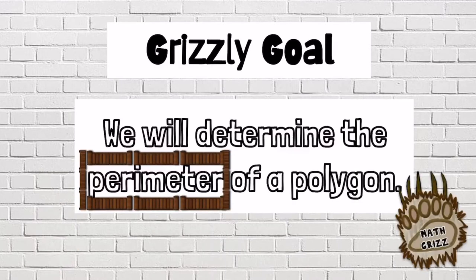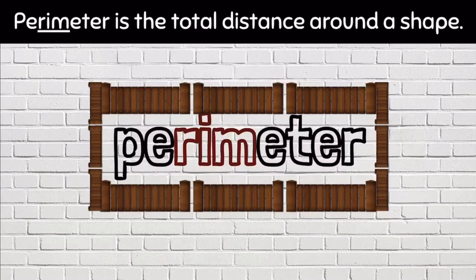Welcome back Math Grizz! Today we will determine the perimeter of a polygon. The perimeter is the total distance around a shape.